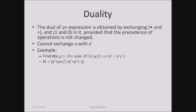One important property is duality. The dual of an expression is obtained by exchanging AND with OR, and 1 with 0, provided that the precedence of the operators is not changed. So given a function, we can obtain its dual by replacing AND symbols with OR symbols and zeros with ones, and vice versa. The output of both functions should be the same, the precedence of operators must not change, and we cannot exchange x with x complement.